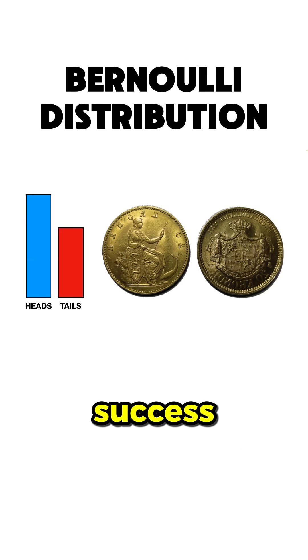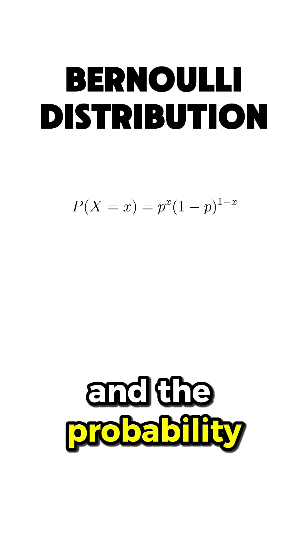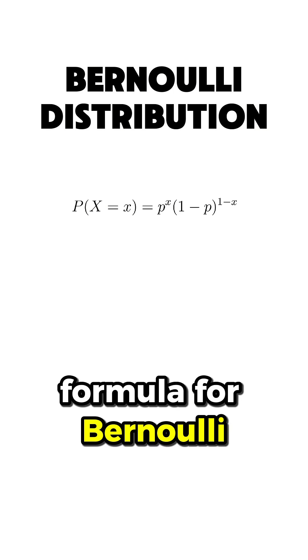where heads might represent success and tails failure. The probability of success, which is heads, is p, and the probability of failure, or tails, is 1-p.